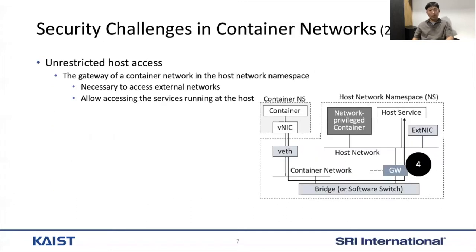The fourth challenge is that containers can easily access the services running at the host side without any restriction. All containers have the gateway of a container network for external accesses. However, the gateway is actually located at the host network namespace, which means that a malicious container can scan host services and even exploit them for malicious purposes through the gateway.